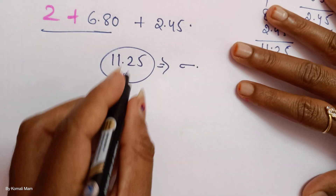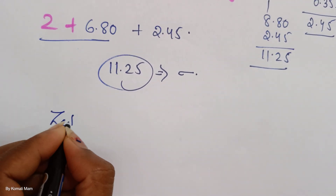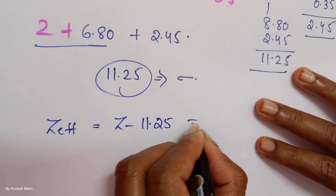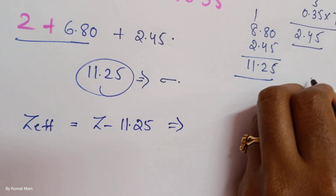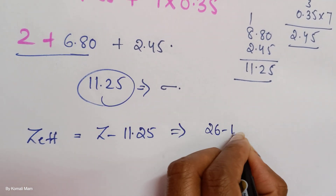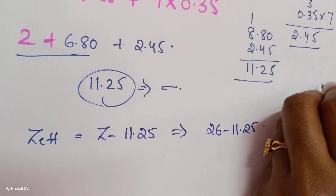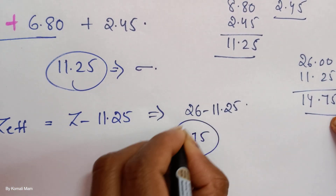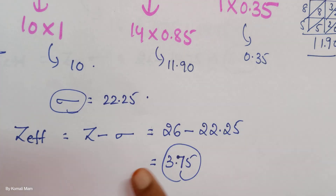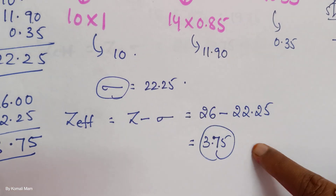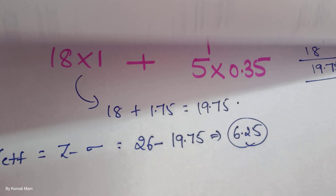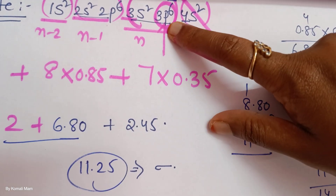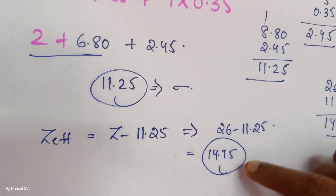Adding all: 2.45 + 6.80 + 2 = 11.25. Sigma value is 11.25. Z_eff = 26 − 11.25 = 14.75. So the effective nuclear charge on the 3P electron is 14.75.